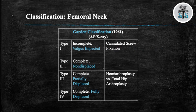One of the most important classifications in all of orthopedics is the Garden classification, which is based off an AP x-ray, broken down into four subtypes. Type 1 is an incomplete fracture with valgus impaction. Type 2 is a complete fracture but still non-displaced. Type 3 is a complete fracture that is partially displaced. Type 4 is a complete fracture and fully displaced. Treatment options are dictated based on whether the fracture is displaced or non-displaced: Type 1 and 2 can be treated with cannulated screws, while Type 3 and 4 require hemiarthroplasty or total hip arthroplasty.